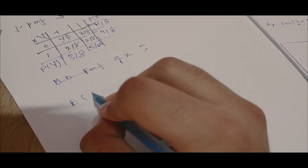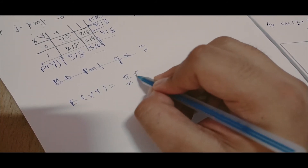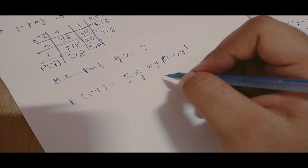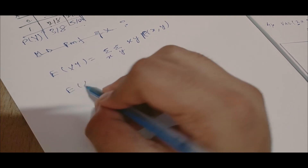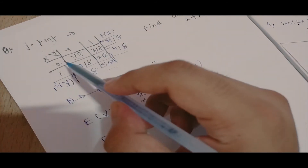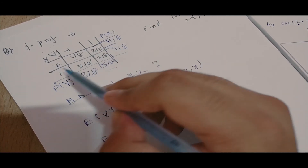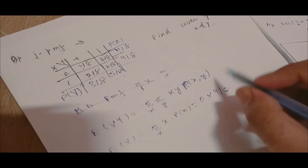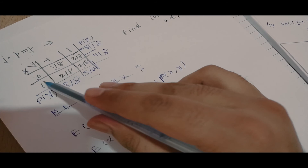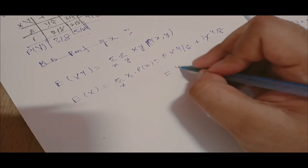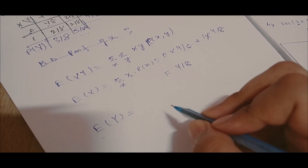E(XY) = summation over x and y of x·y·P(x,y). For E(X): E(X) = summation of x·P(x) = 0·(4/8) + 1·(4/8) = 4/8.